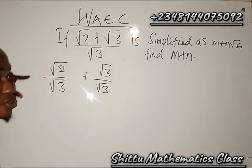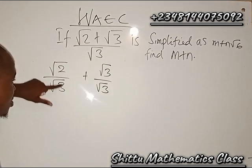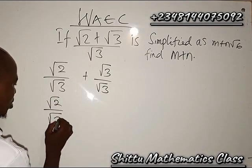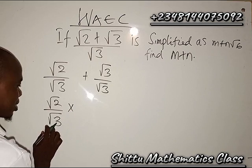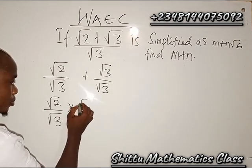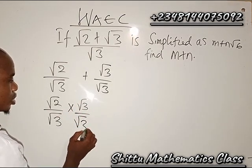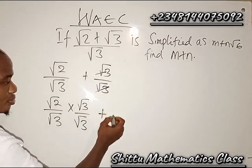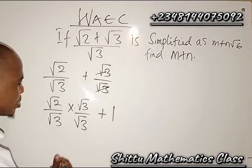So now from there I can now do the surds rationalization for the first step here by having root 2 over root 3 multiplied by root 3 over root 3, then plus here this we cancel this we have 1.